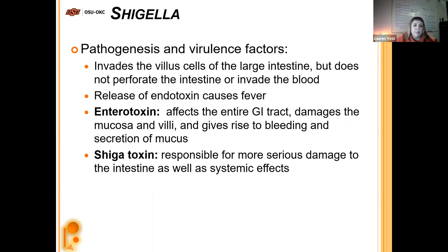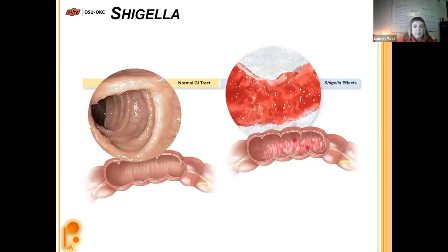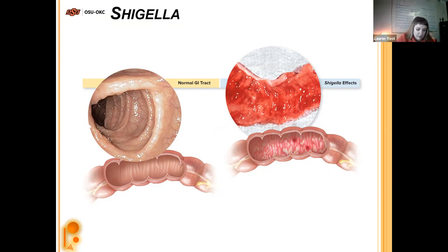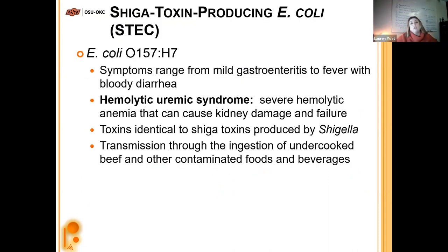We have bleeding and secretion of mucus as a result of the enterotoxin. The Shiga toxin is responsible for more serious damage to the intestine as well as systemic effects. Enterotoxin, Shiga toxin — bad. They cause dysentery and awfulness. Some E. coli also produce the same Shiga toxin — the most concerning being STEC, E. coli O157:H7, one of the most concerning strains when looking into E. coli contamination of food products.